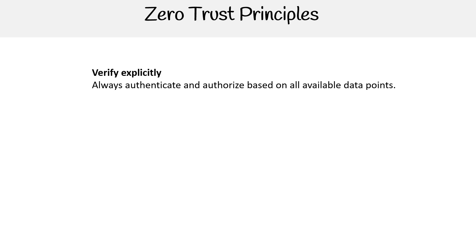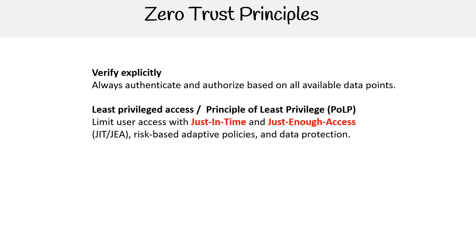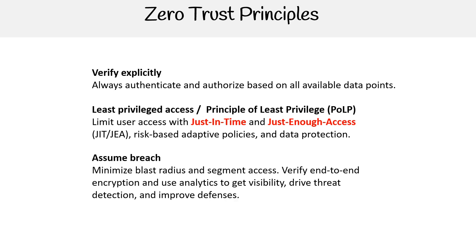The next principle is least privileged access: you limit user access with just-in-time and just-enough access, risk-based adaptive policies, and data protection to protect both data and productivity. Then we have assume breach: minimize blast radius, segment access by network, user, device, and application, verify end-to-end encryption, and use analytics to gain visibility, drive threat detection, and improve security. That's Microsoft's zero trust model and its three guiding principles.